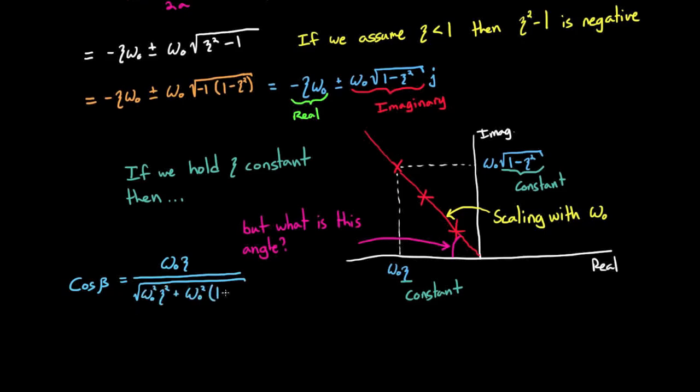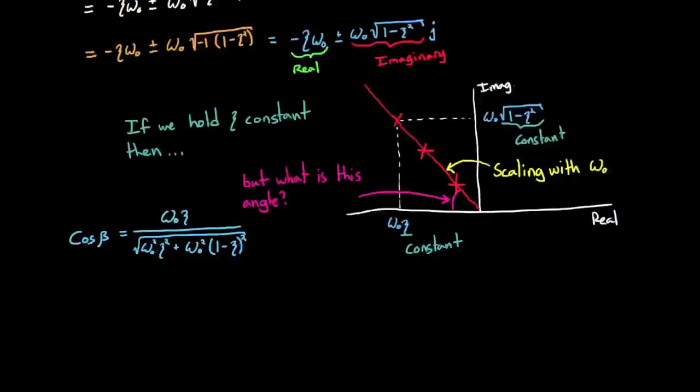But what is the angle of that line? This can be determined using trigonometry and recognizing the right triangle that is made with the real axis. The adjacent side of the triangle is ω₀ times ζ, and the hypotenuse is the square root of the real and imaginary component. I really love these types of problems because as you expand it all out, all of the terms cancel and you're left with just cosine of β equals ζ.